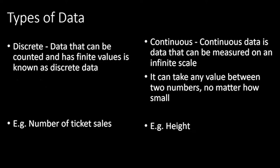Discrete data consists of whole numbers — finite values that can be counted. For example, the number of ticket sales to a new movie is discrete. Continuous data is any data that can be measured on an infinite scale — for example, height can be 68.752317 centimeters; you can keep going on and on. Height can take any value between any two numbers, no matter how small, though in practice you are limited by your measuring instrument.